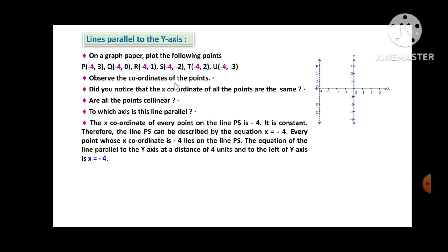Did you notice that the x-coordinate of all the points is the same, which is -4, shown in pink? Are all the points collinear? Yes, all those points are collinear, and this line is parallel to the y-axis. The x-coordinate of every point on the line is -4, so it is constant. Therefore, the line is described by the equation x = -4. Every point whose x-coordinate is -4 lies on this line. So the equation of the line parallel to the y-axis at a distance of 4 units to the left is x = -4.